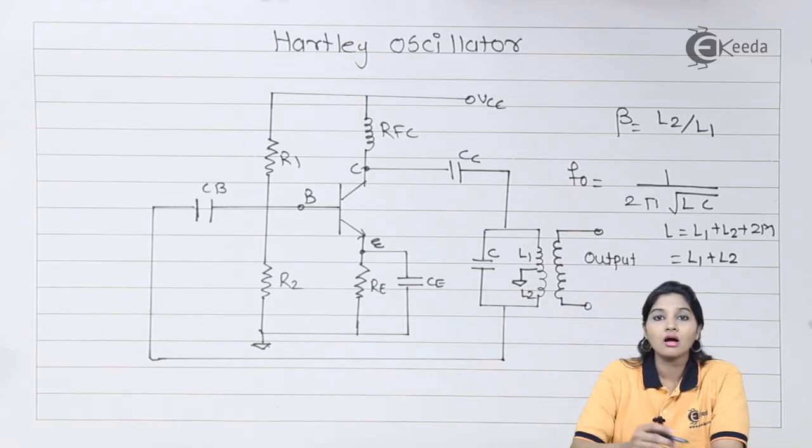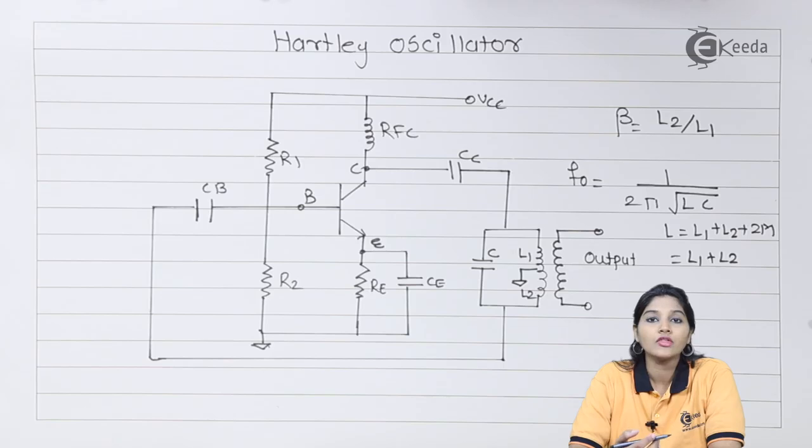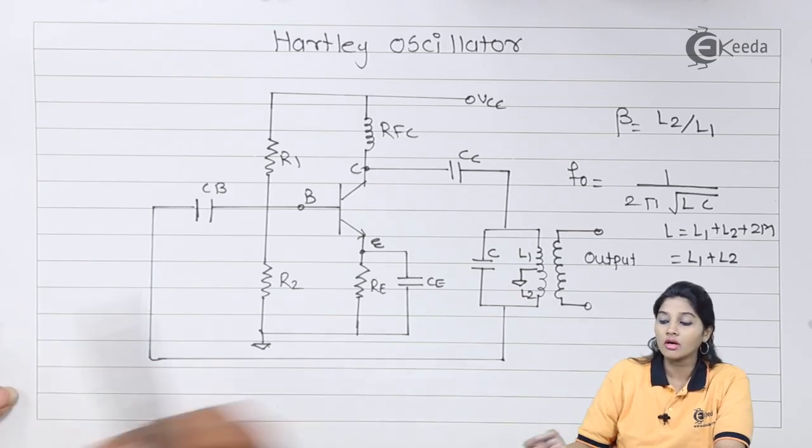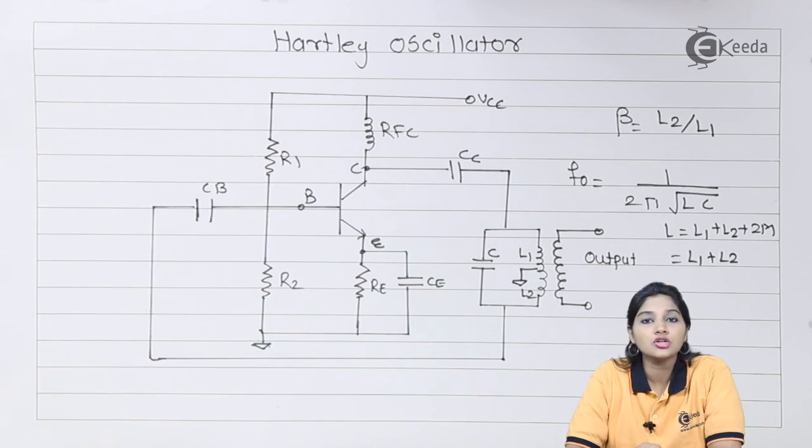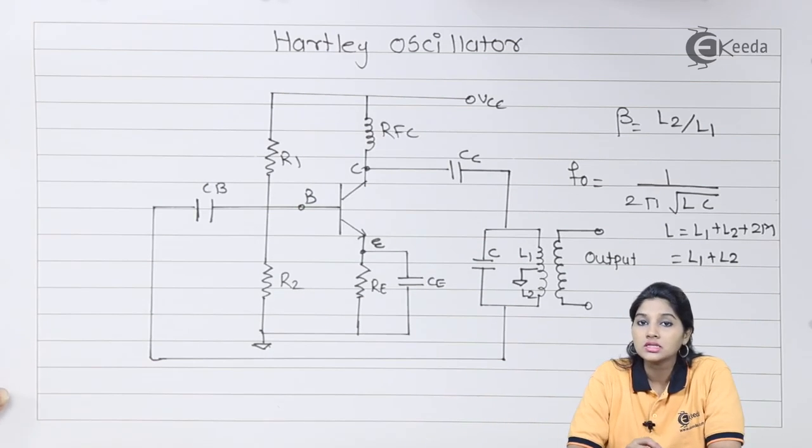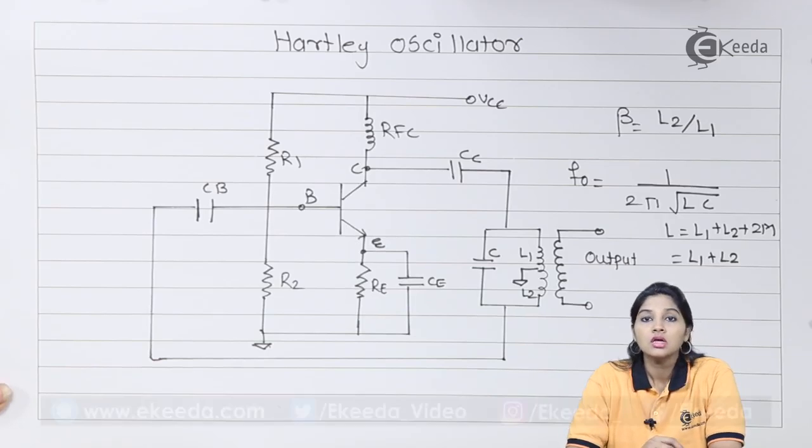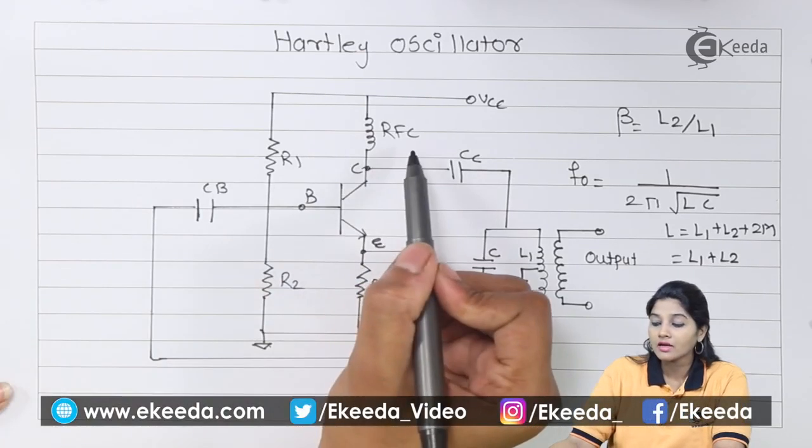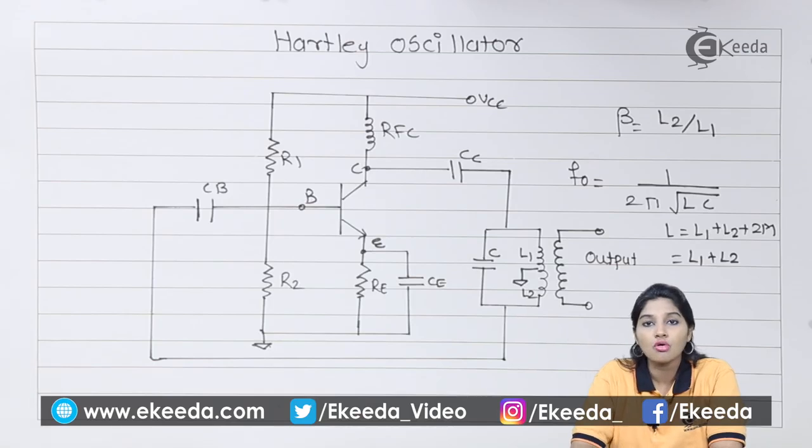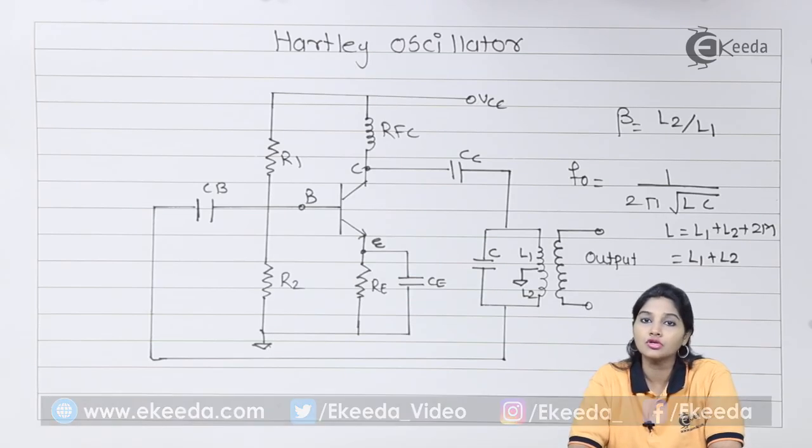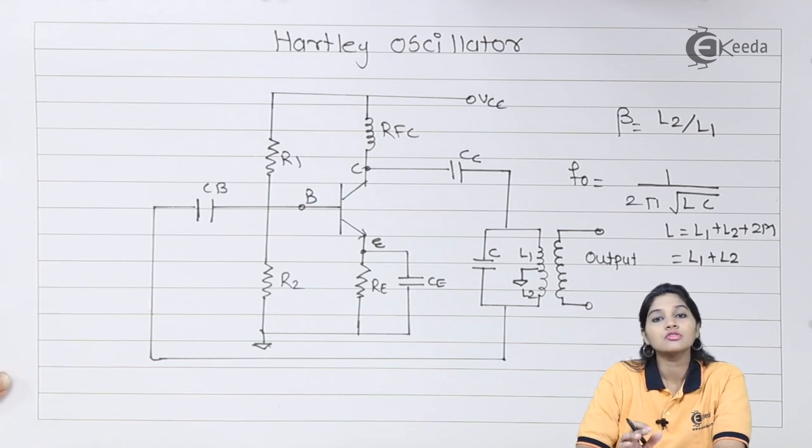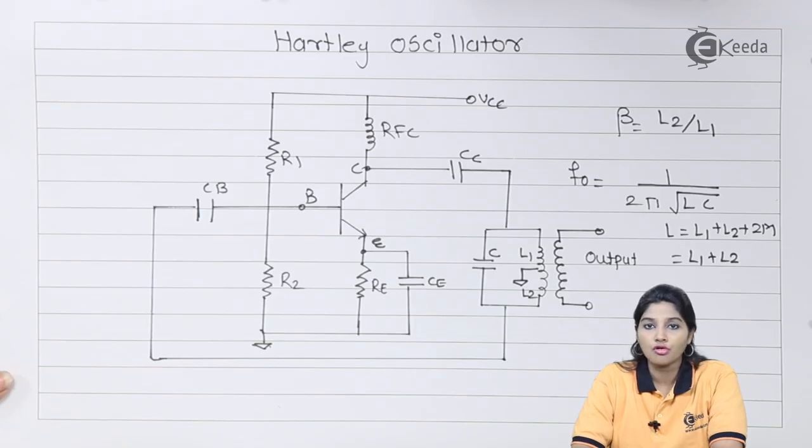The coils L1 and L2 are combined or connected with each other and their combination forms the auto transformer. Another coil, RFC called radio frequency choke coil, is connected between VCC and collector of the transistor. In this case, the RFC blocks AC component and allows only DC component to pass through the circuit. The transistor is used in common emitter configuration and acts as an amplifier.